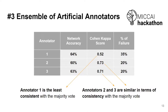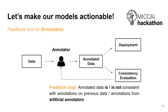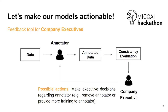Our work was to define consistency and develop models to evaluate it. How can we use this consistency metric? We can use it in real-world contexts as a feedback tool for annotators, to check if an annotation made during the data annotation process is consistent with past data or artificial annotator labels, and give the annotator a chance to improve their annotations. We can also provide it as a feedback tool to companies, evaluating annotators and identifying the least consistent ones so that executives may decide to give them more training or remove them from the pipeline.